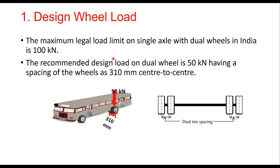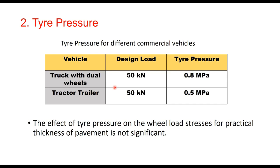The maximum legal load limit on a single axle with dual wheels in India is 100 kilo Newton. Therefore, the recommended design load on dual wheel is 50 kilo Newton with a wheel spacing of 310 mm center to center. Tire pressure for design is taken as 0.8 MPa for trucks with dual wheels and 0.5 MPa for tractor trailers, though tire pressure has hardly any effect on wheel load stresses for practical pavement thicknesses.